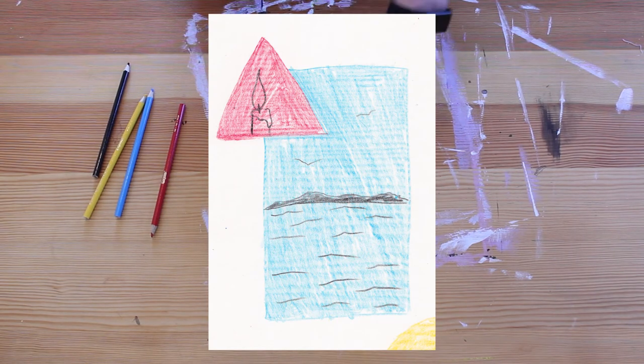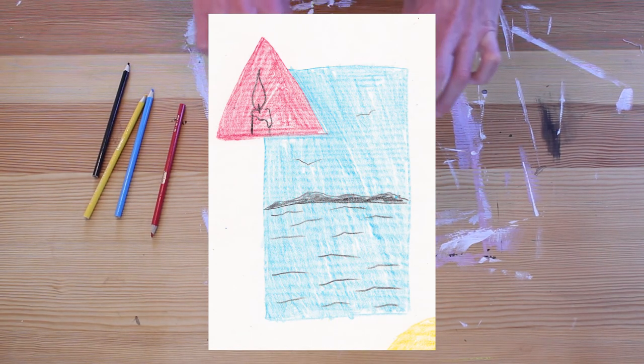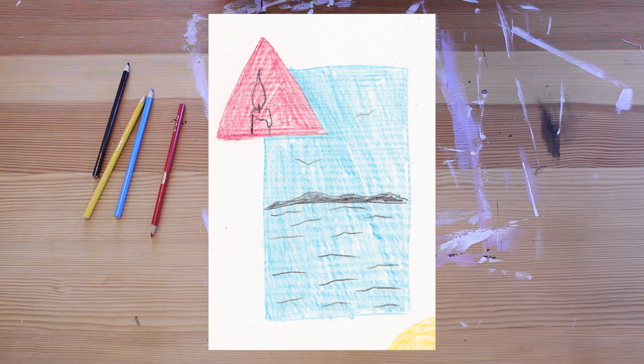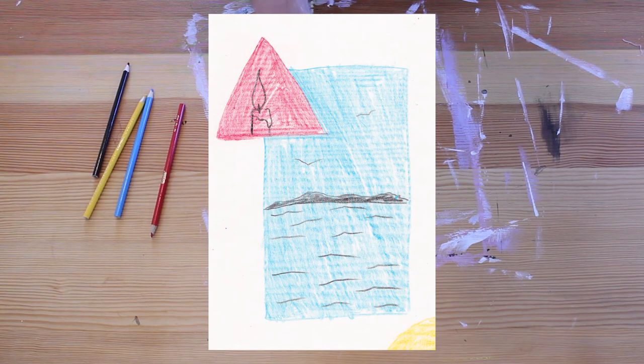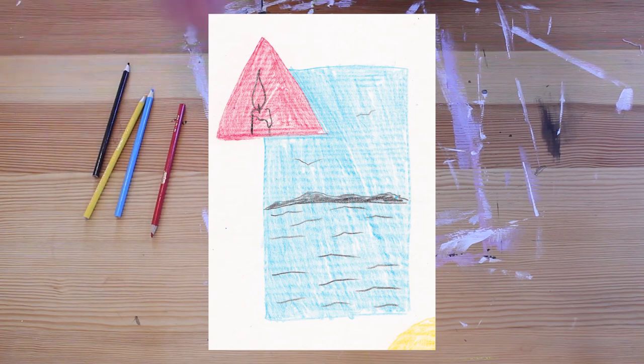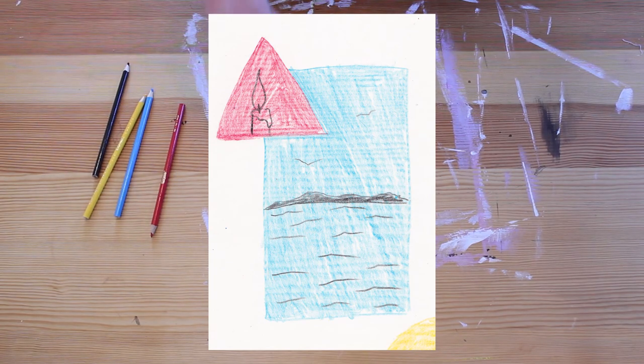In the blue one we have kind of an ocean seascape, the waves are curved, there's kind of an organic landmass in the background with lots of bumps and irregular ups and downs. Some birds as well.